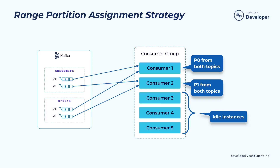Now let's look at some of the assignment strategies. One of the assignment strategies is called range partition. What it does is distribute the partitions at each individual topic level. So it will look at the first topic, divide up its partitions among the consumer members, then go through the next topic and do the same thing. As you can see, partition 0 from both topics will be assigned to consumer 1, and similarly, partition 1 from both topics will be assigned to consumer 2.